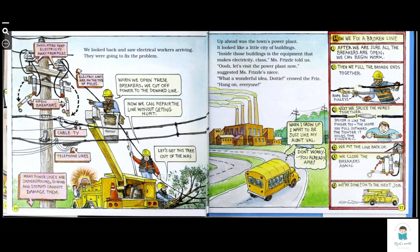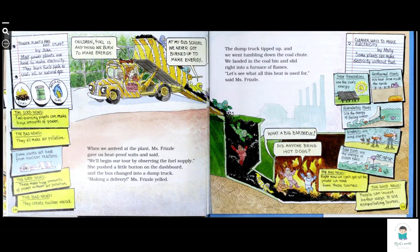How I fix a broken line: One, after we are sure all the breakers are open, we can begin work. Two, when we pull the broken ends together, rock and pull. Three, next we splice the wires together. Splicing is like the finger toy. The more you pull forward, the tighter it holds the fingers. Finally, we put the line back up, we close the breakers again. Set, we're done. On to the next job.